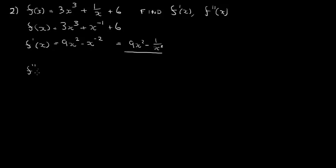The second differential, f''(x), the same process again. 2 times 9 is 18, x, 2 minus 1 is 1, so it's just 18x. Minus 2 times minus 1 is plus 2x to the minus 3. We can rewrite that as 18x plus 2 over x cubed.